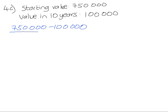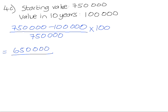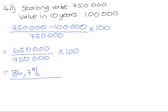Which will be $750,000 minus $100,000. You're going to divide that by the starting value, because you want to find out how much the starting value has changed in percentage by. And times that by 100. That gives you $650,000, divide by $750,000, multiplied by 100. And that gives you a percentage of 86.7%. So in other words, the car has depreciated or lost value by 86.7% in the 10-year period.